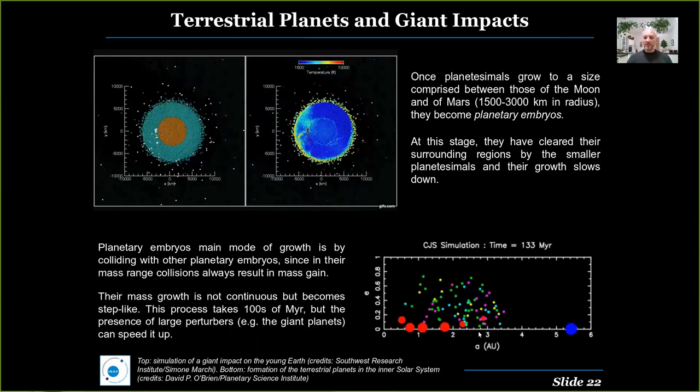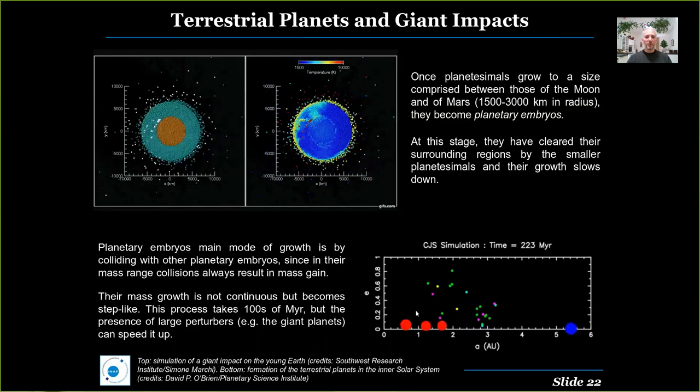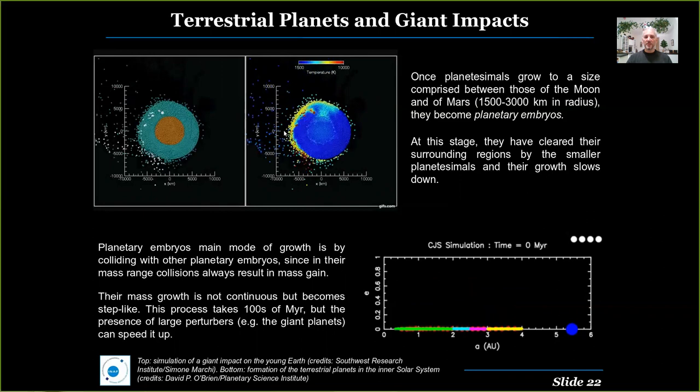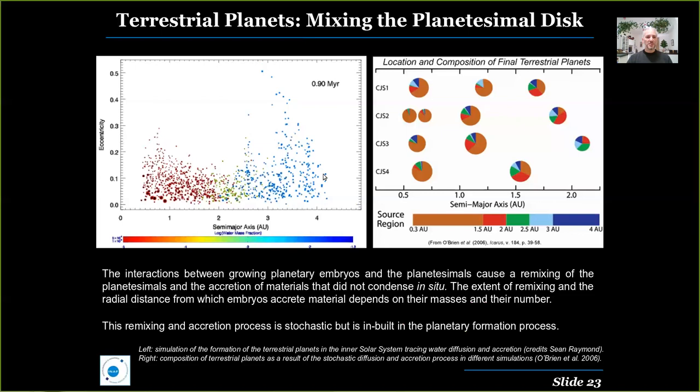In this size range and stage of planetary growth, impacts even between large bodies like two oligarchs tend to be always accretional, so they can be approximated as completely inelastic impacts where the final mass of the remaining bodies is, to good approximation, the sum of the masses of the two impacting bodies.